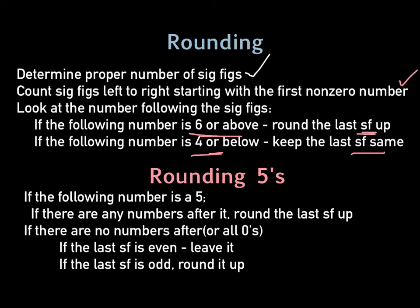Now, I didn't include 5s in there because there's a special rule in chemistry for 5s. If that following number after the sig figs is a 5, then if there are any numbers after it, then you round that last significant figure up. So if it were like this, 155, and these were our two sig figs right here, you look at this next one, well, that's a 5. So there are no numbers after it. If the last significant figure is even, so we look at this last sig fig right there, if that was even, we leave it. But if it's odd, we round it up.